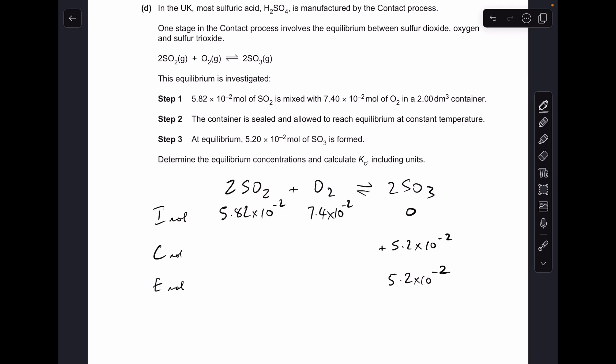If we look at the mole ratio, we can say that the SO2 is going to go down by the same amount that the SO3 has gone up because of the ratio, so that means left at equilibrium there'll be 0.0062 moles of SO2.